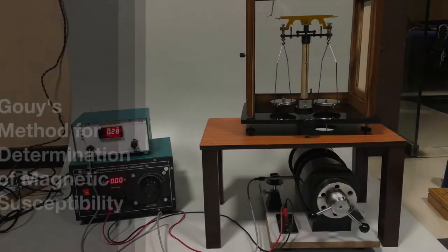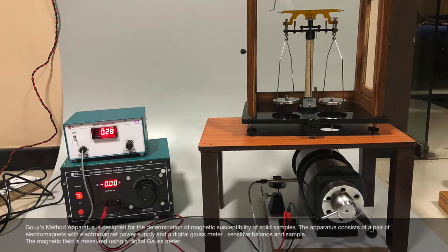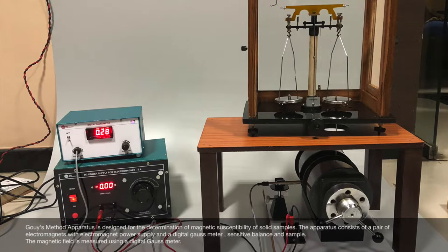GOEI's method apparatus is designed for the determination of magnetic susceptibility of solid samples. The apparatus consists of a pair of electromagnets with electromagnet power supply, a digital gauss meter, a sensitive balance, and a sample.